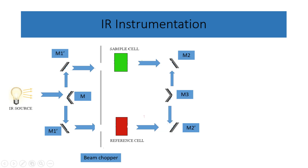A beam chopper, driven by a motor, guides the light towards mirrors M, M1, M1', M2, M2', and M3, to alternate between the reference and sample light. The mirrors ensure proper reflection and redirection of the light.